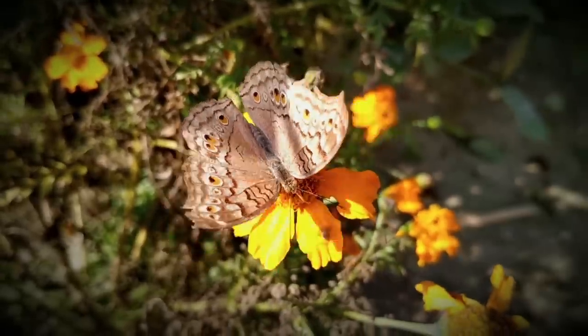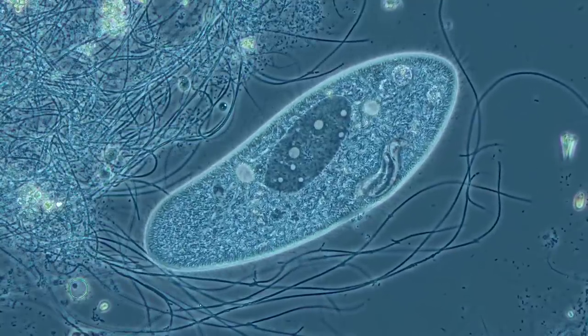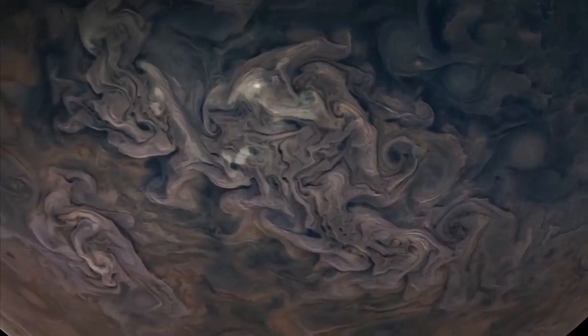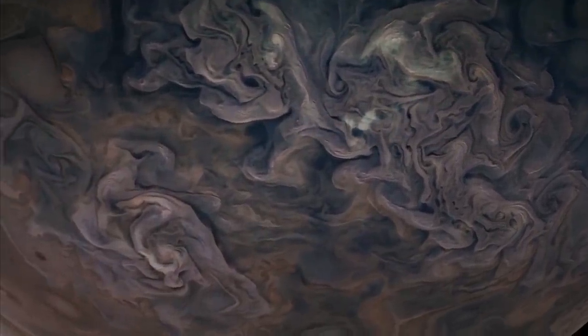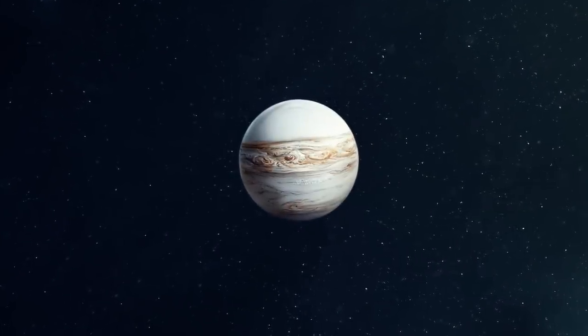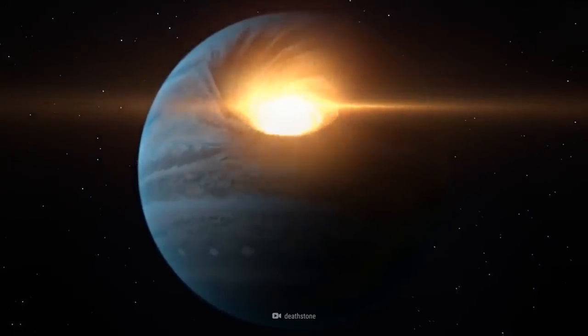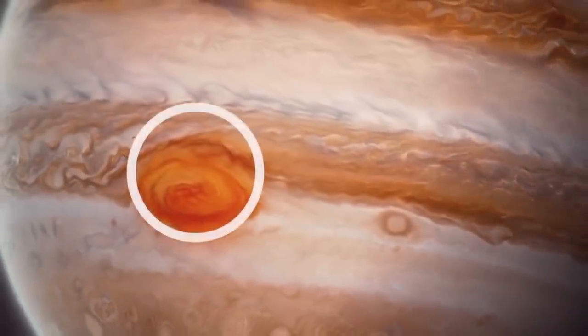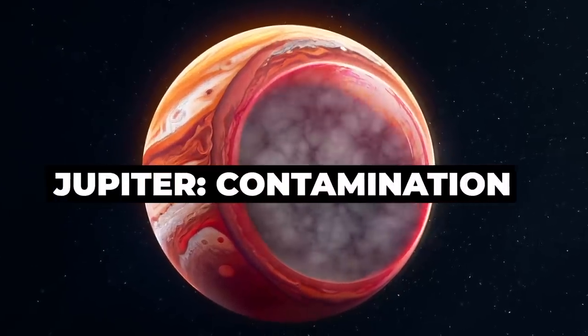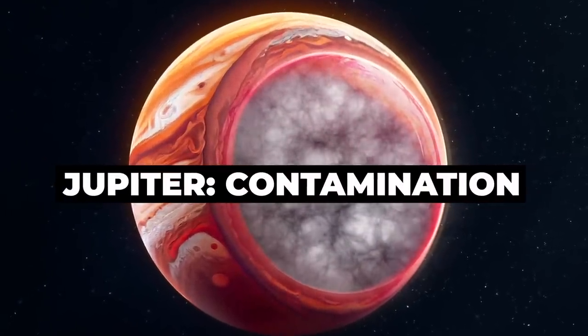But what if I told you that Jupiter could be destroyed by life? Even the tiniest living organism brought to the gas giant could be the beginning of the end. In this video I'll tell you what can change the color of Jupiter and even blow it up, what the Great Red Spot actually could be, and how life on Jupiter will destroy the planet.